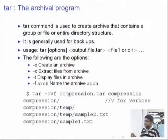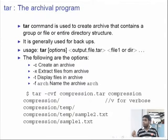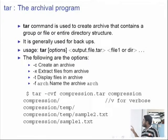Here are the options for tar: -c is to create an archive, -x to extract files from archive, -t to display the files in archive, and -f followed by the archive file name. For example, you can try: tar -cvf compression.tar compression, where compression.tar is the output archive file name and compression is the directory.